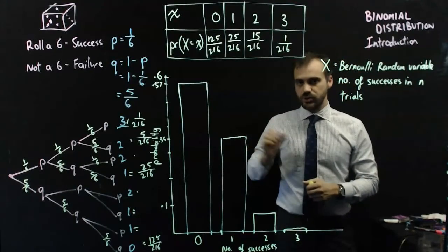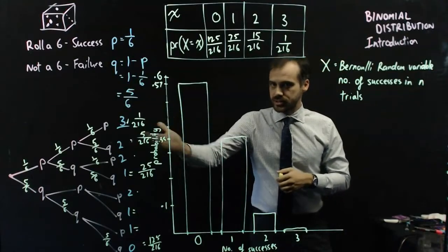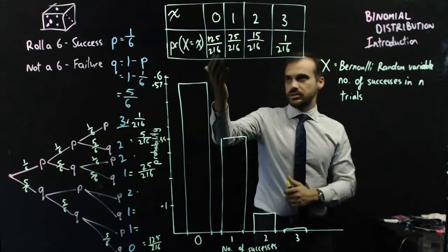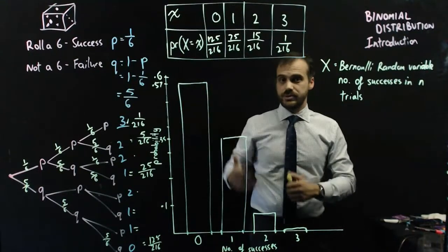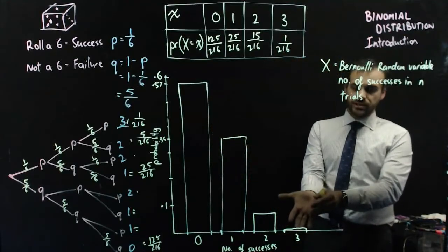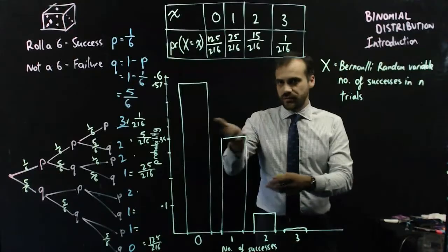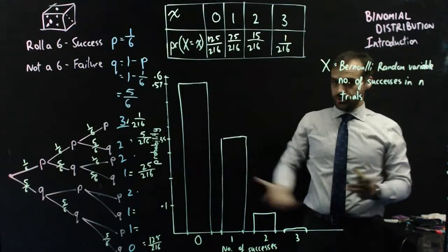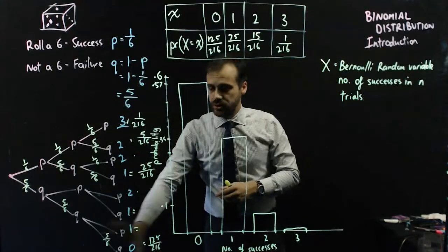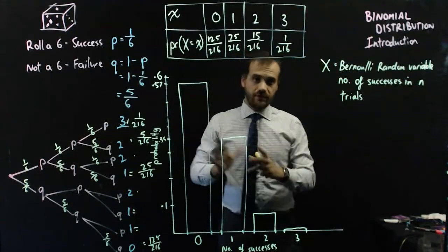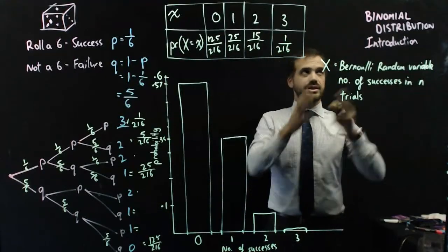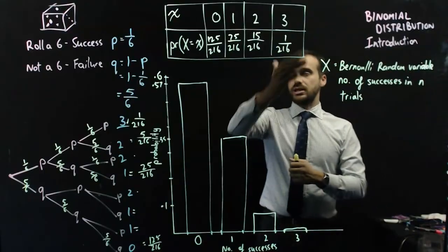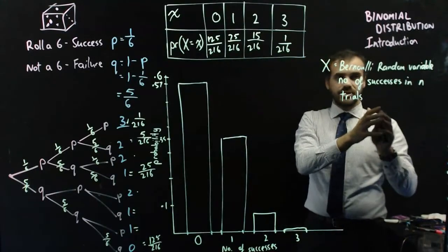You do a Bernoulli sequence, an experiment. You count how many successes you get. You map the probability of that number of successes happening. In this case, you're very likely to not get any sixes - more than 50% likely. You have to be really lucky to get three sixes. There's a 35-ish percent chance that you'll get one six from your three rolls. This is a binomial distribution. It's an introduction here. You're not going to be expected to do this all the time. We've got some great formulas and calculator tools. But I want you to understand what a binomial distribution is. It's a graphical representation or a calculation in a table here - the number of successes in n trials.